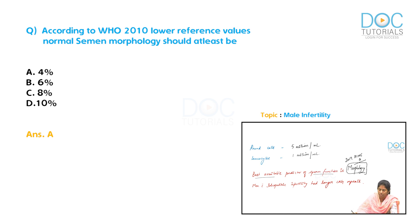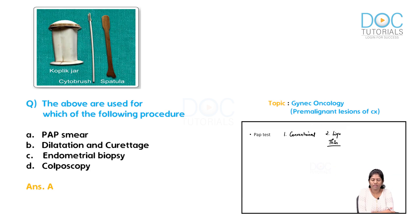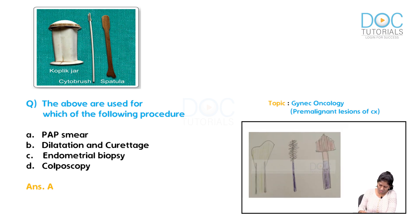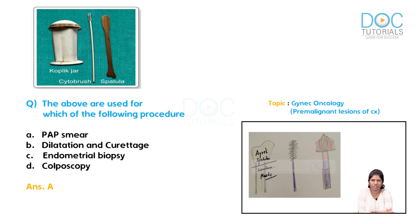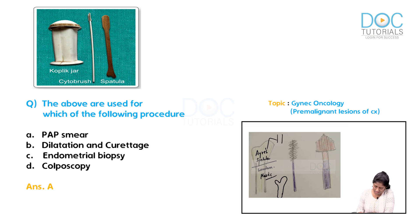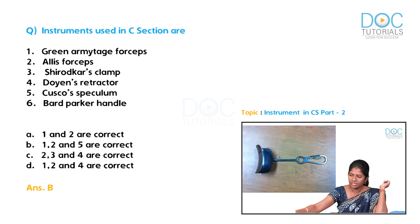To take a Pap smear, we use a spatula called the Ayres spatula. It is either a wooden or plastic spatula with two ends — one end is bifid and the other is convex. We insert the bifid end into the endocervix. The next instrument to discuss is the Doines retractor.